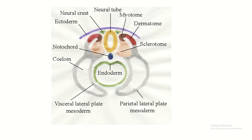This is the cross-section of the embryo. This is the surface ectoderm, this is the neural tube, this is the mesoderm, and this is the endoderm. This is the paraxial mesoderm, this is the intermediate mesoderm, and this is the lateral plate mesoderm.